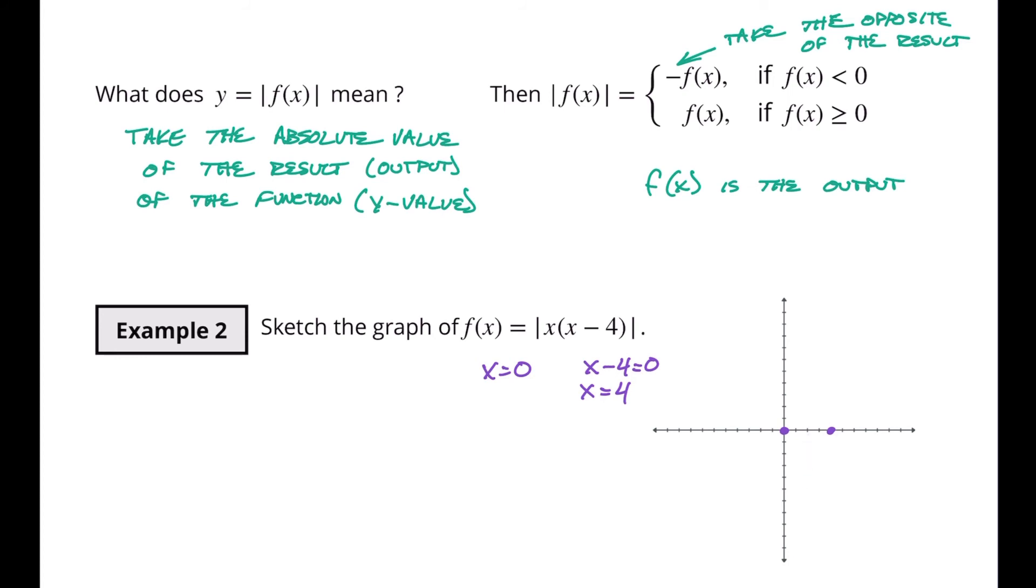How far down do we go? Well if we want to know how far down here we go without the absolute value we would say what is F of two? That would be two times two minus four and that's going to be minus four. So we would normally have a graph that looks something like this. Now that's our normal graph without the absolute value.